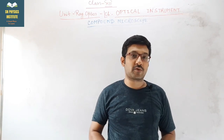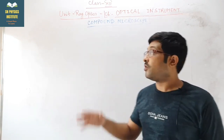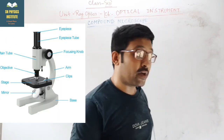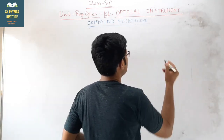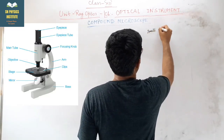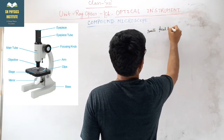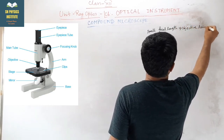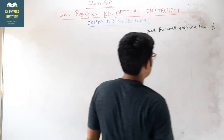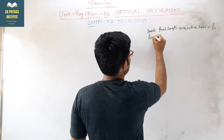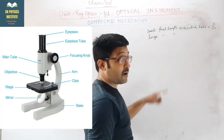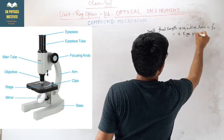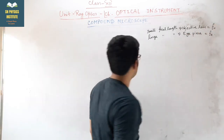We have discussed the simple microscope. Now I am discussing the compound microscope. In a compound microscope there are two lenses. One has a very small focal length - this is known as the objective lens and its focal length is fo. The other lens has a large focal length compared to the objective lens - this is known as the eyepiece, denoted by fe.